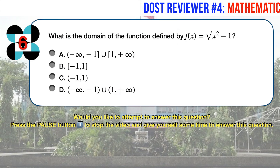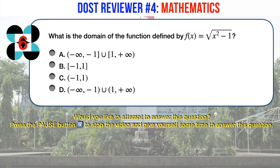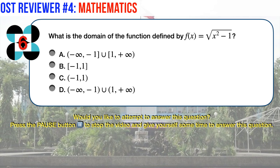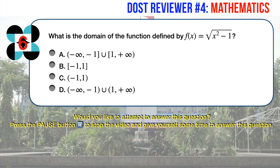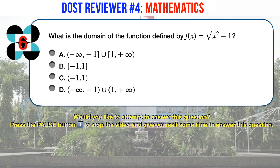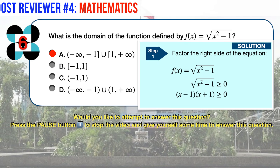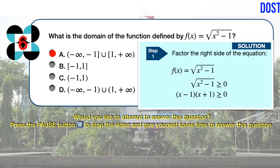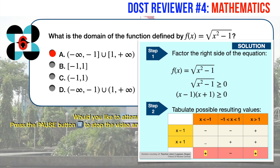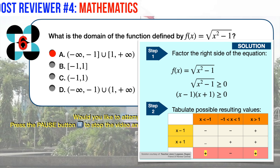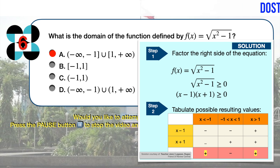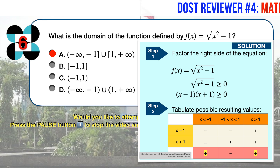Math question number 6. What is the domain of the function defined by f(x) equals the square root of the quantity x squared minus 1? The correct answer is A. Factor the expression to get (x minus 1)(x plus 1) greater than or equal to 0. Tabulating the possible values from these factors shows that for x less than or equal to minus 1 and x greater than or equal to 1, f(x) is non-negative. Thus, the domain is as shown in answer choice A.